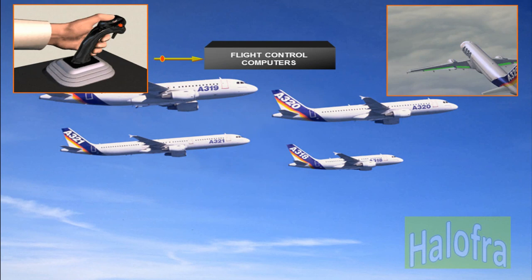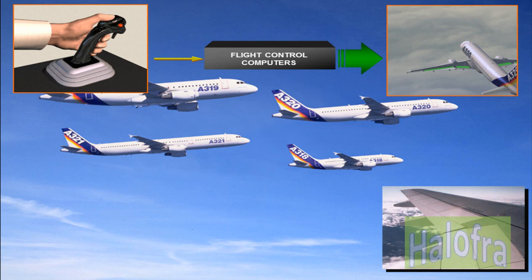The electrical signals, created by side stick movement, travel through flight control computers before being passed to the surface hydraulic actuators, also named servo controls. The pilots use the side sticks to fly the aircraft. Computers interpret the pilot's inputs and move the flight control surfaces as necessary, preventing excessive maneuvers and flight outside the safe flight envelope.